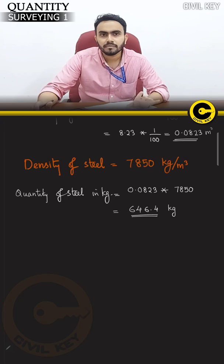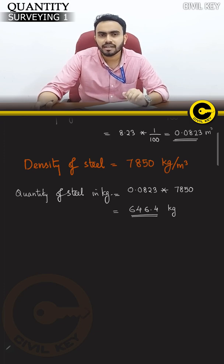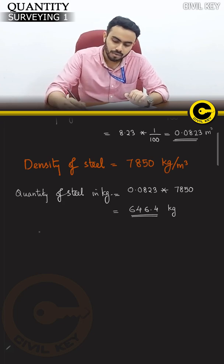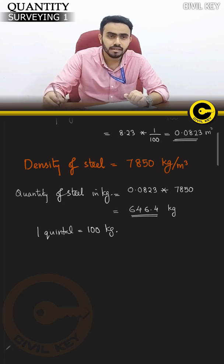The quantity of steel is expressed in quintals. Since 1 quintal equals 100 kg, the quantity of steel is 646.4 kg, which we can convert to quintals accordingly.